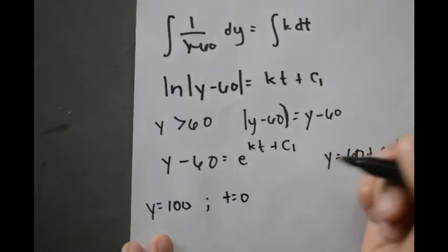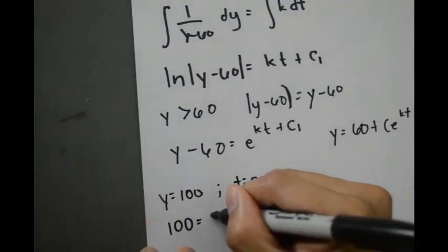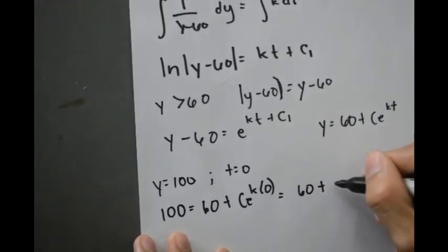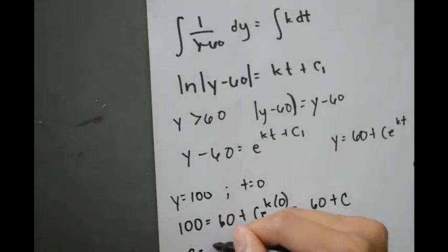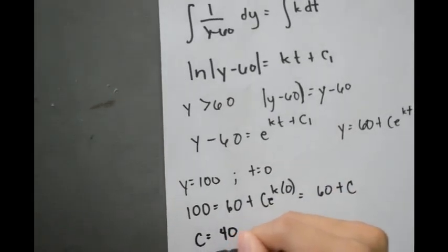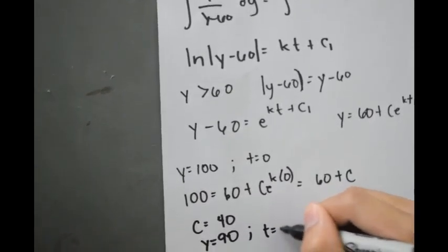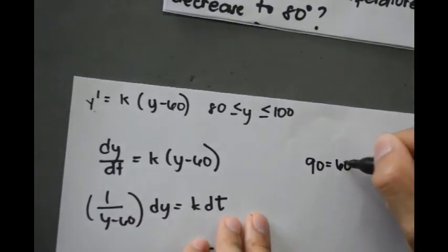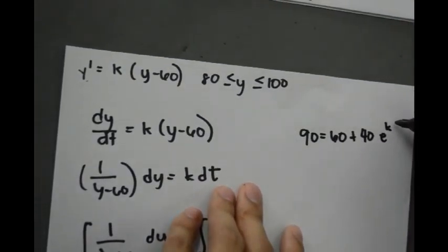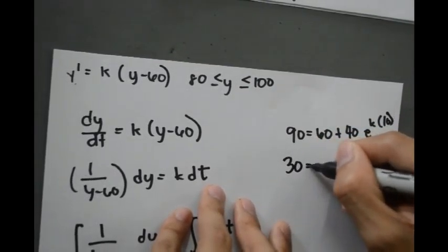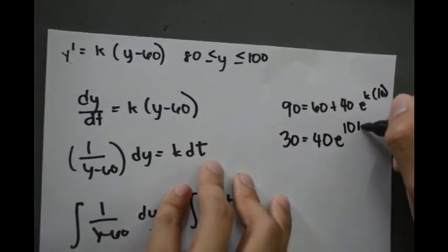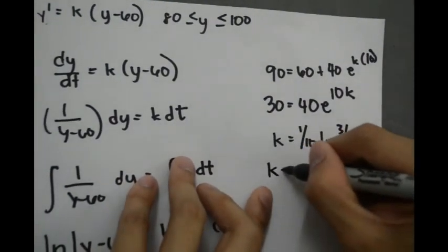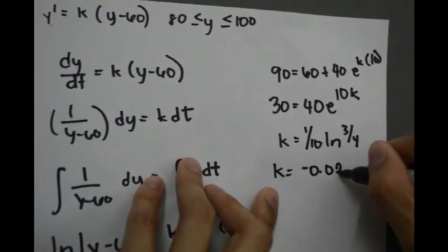Using y equals 100 when t equals 0: 100 equals 60 plus c times e raised to k times 0, which gives 60 plus c, implying c equals 40. Because y equals 90 when t equals 10: 90 equals 60 plus 40 times e raised to 10k, so 30 equals 40 times e raised to 10k. Therefore k equals 1 over 10 times ln of 3 over 4, so k is equivalent to negative 0.02877.